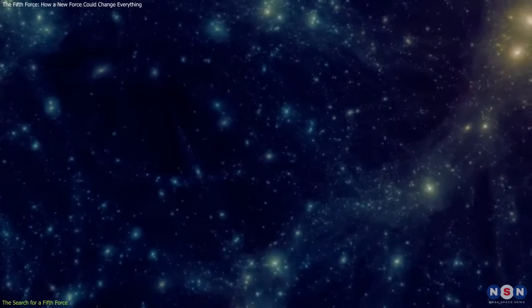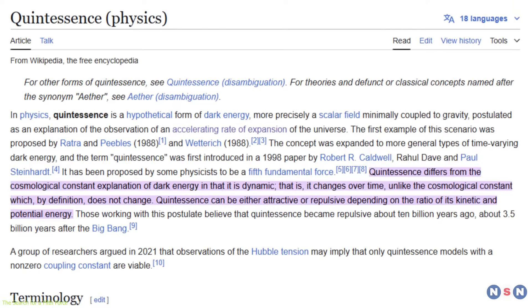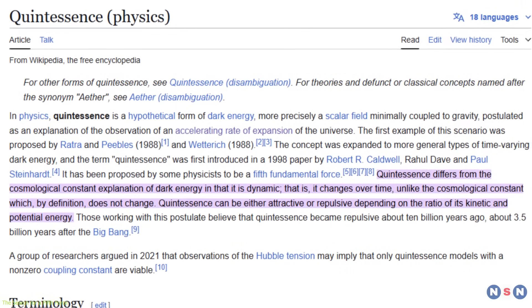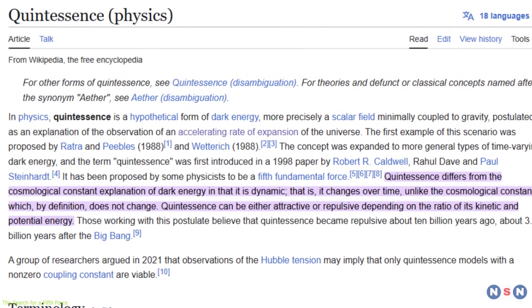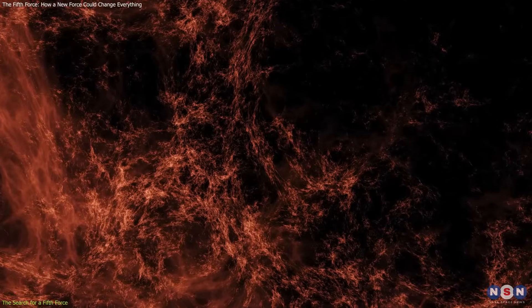Despite extensive efforts, dark matter has eluded direct detection, raising questions about whether an unknown force might influence its behavior. One compelling theoretical proposal is quintessence, a dynamic field that evolves over time, potentially explaining the nature of dark energy.